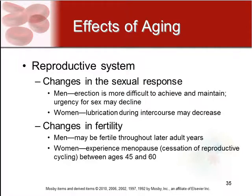Regarding fertility, women experience menopause normally between the ages of 45 and 60. This is when they can no longer produce eggs to become fertilized. Men, on the other hand, will remain fertile throughout the later adult years.